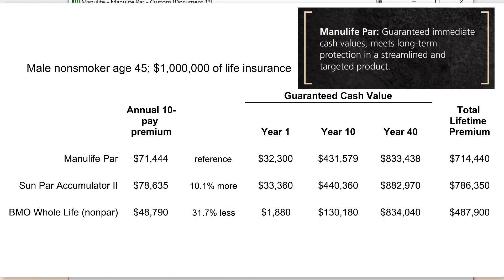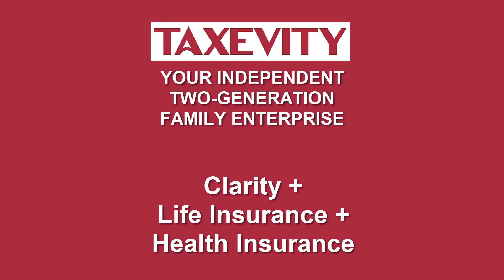Products can only do certain things. Manulife PAR says it's designed to provide guaranteed immediate cash values and long-term protection. Looks like those goals are being met based on our very limited test. We will do much more analysis and provide the information to you once we have it.